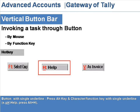Button with single underline: press the alt key plus the character or function key with a single underline. For example, underscored H (Help) — press Alt + H.